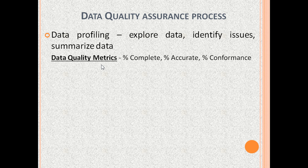Data quality can be expressed in data quality metrics such as %Complete, %Accurate, and %Conformance — meaning conformance to business rules like a value should be greater than or equal to the lower range. Manual data profiling with SQL queries is effort intensive, so only a small subset of data can be profiled. However, tools like SQL Server Data Quality Services do not require writing SQL queries and can run checks on the entire data set quickly.